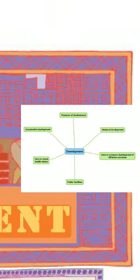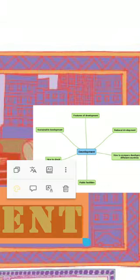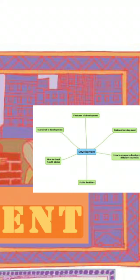The fourth topic is public facilities. In public facilities, we include what public facilities are, who is providing them, and whether these facilities are equally available to all. The fifth topic is how to check health status — there is one method to check whether a person is nourished or undernourished. The last topic is sustainable development, a very important current topic, where we will discuss what it is and how we can achieve it.